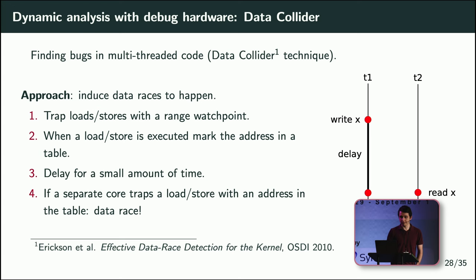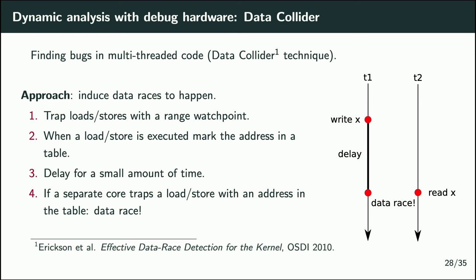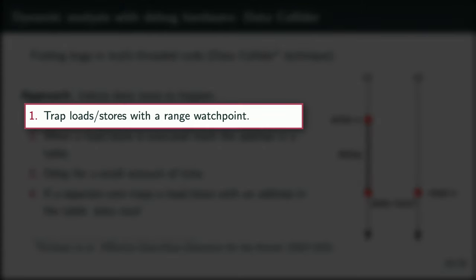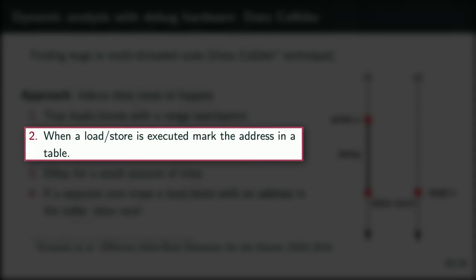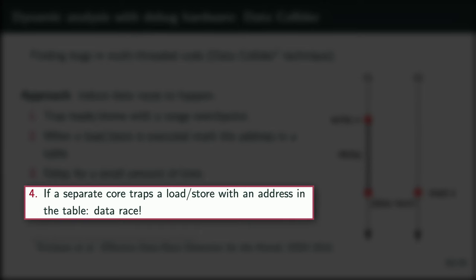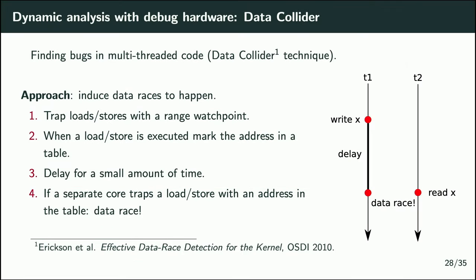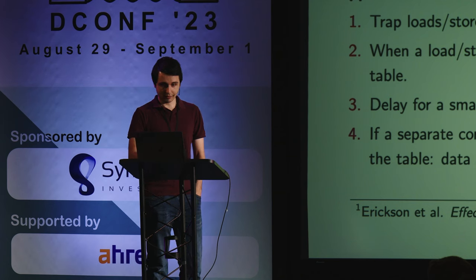One technique for finding data races is the data collider technique, from a paper published at OSDI in 2010, which can be reimplemented using this debugging hardware approach. You set range watchpoints on your heap; when a load or store happens, you get a debug exception, record that address into a table, then start delaying for maybe 1.5 microseconds. Another core also has a watchpoint configured — if it gets trapped from a load or store, it checks whether that address is in the table. If so, that's a data race, because those two threads could have read and written that memory at the same time. A very simple implementation, maybe 50 lines of code.